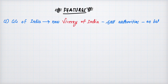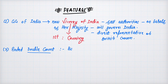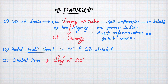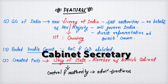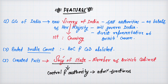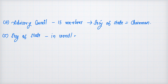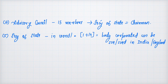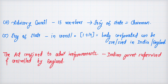Features of Government of India Act 1858: The Governor General of India became the Viceroy of India, with full authority on behalf of Her Majesty the Queen — the first Viceroy was Lord Canning. It ended double government by abolishing the East India Company, so the Board of Control and Court of Directors were no longer needed. It created the post of Secretary of State — similar to today's Cabinet Secretary — who was a member of the British Cabinet with control over administrative functions in India. A 15-member advisory council was formed with the Secretary of State as chairman. Members of this council could be sued in India or England in case of breach of law. This act was about administrative improvements, with Indian government supervised and controlled by England.